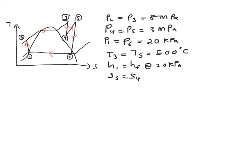And next is your state 5, where you are given your pressure over here, which is 3 MPa, and your temperature 500 degrees C. So automatically you can read all the information that you need from your superheated table.